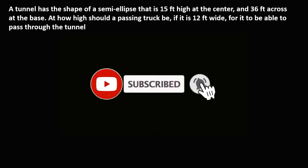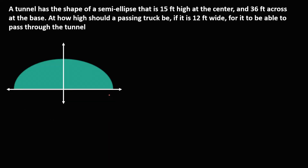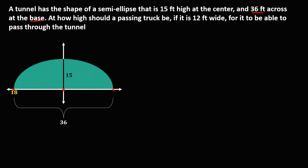So let's solve this problem. A tunnel has a shape of a semi-ellipse that is 15 feet high at the center. In a plane, this is the tunnel, and the height of the tunnel from the center is 15 feet. Then we have 36 feet across the base — from this base to this base, that's 36 feet. Therefore, from the center to each base, that's 18 feet.